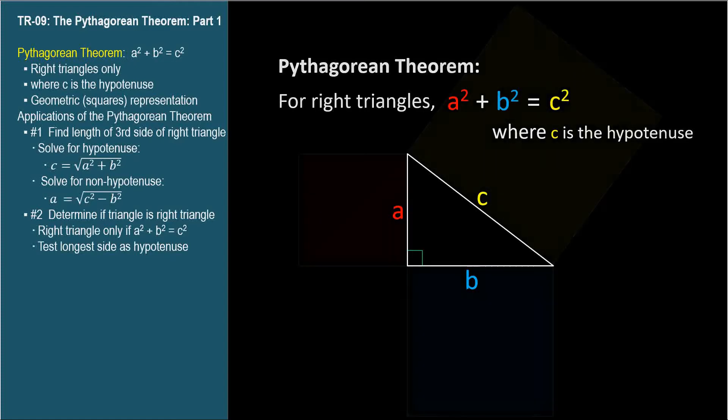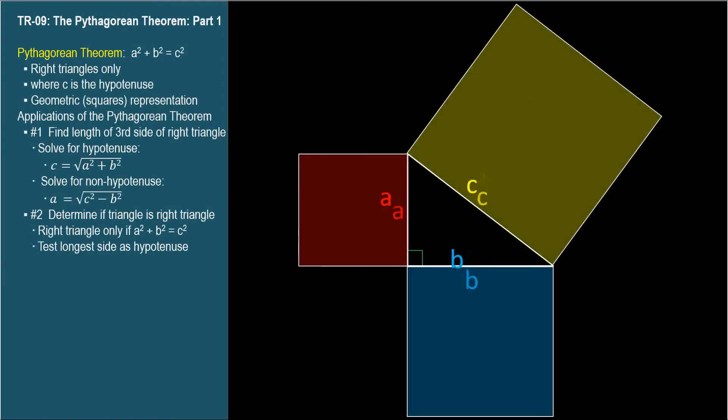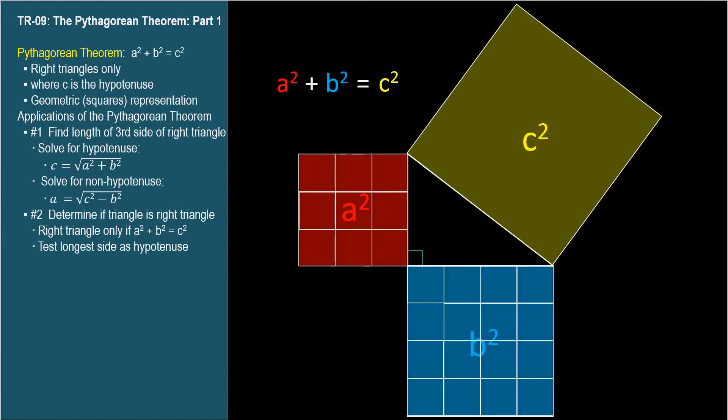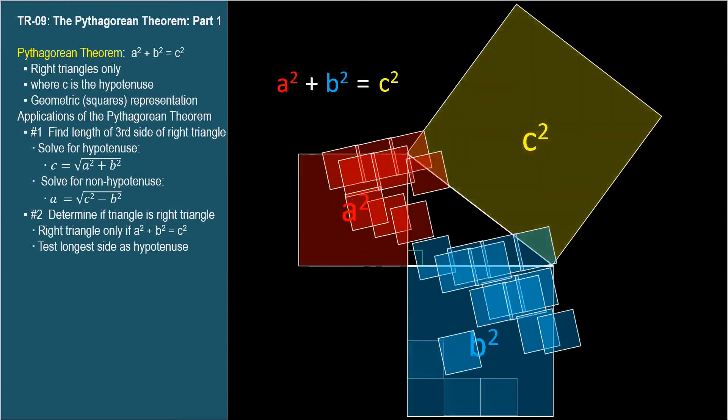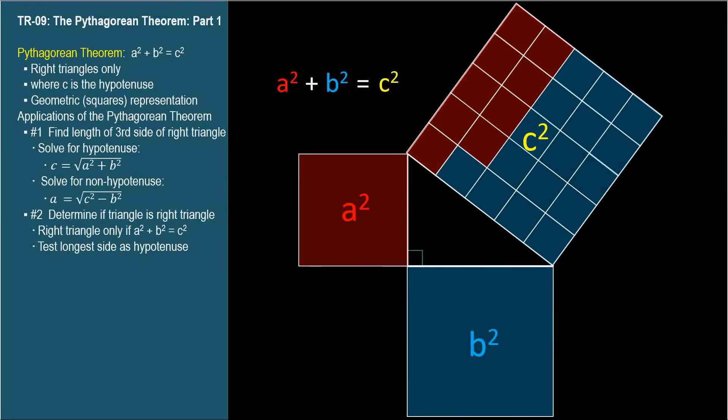There is a simple graphical interpretation of this equation. When we construct actual squares on each of the three sides, the combined areas of the two smaller squares equals the area of the hypotenuse squared. So area of red plus area of blue equals area of yellow.